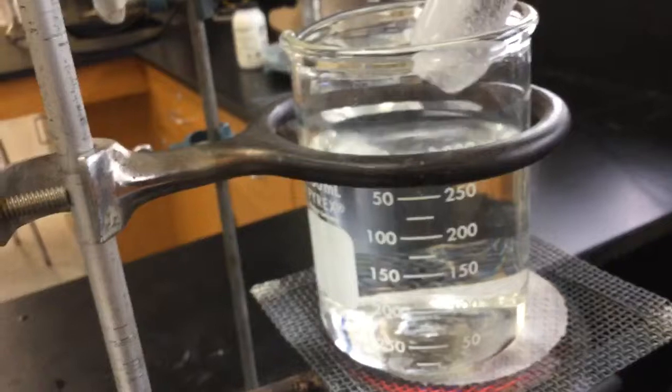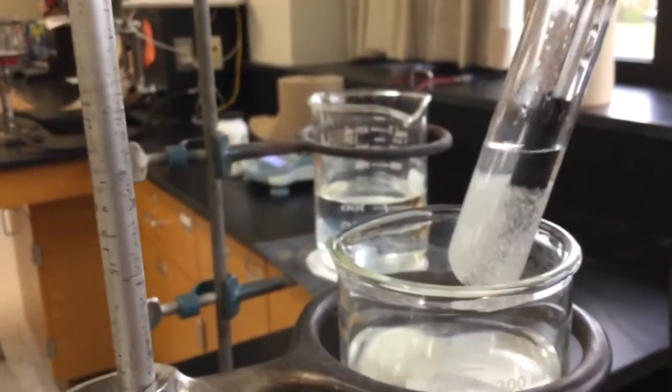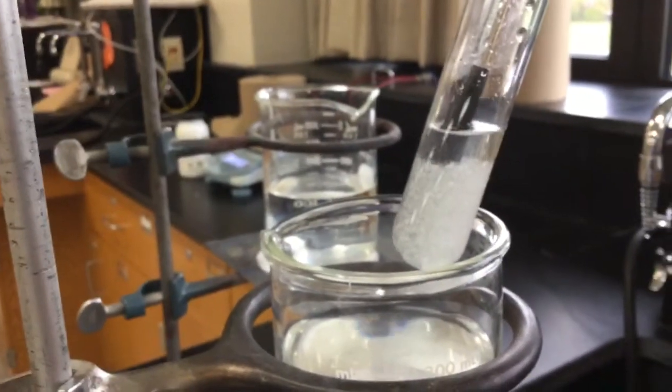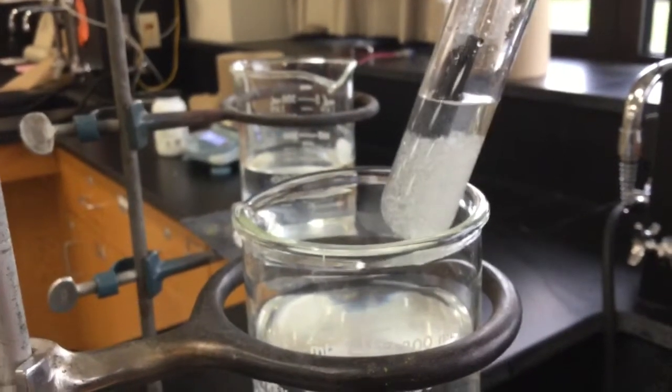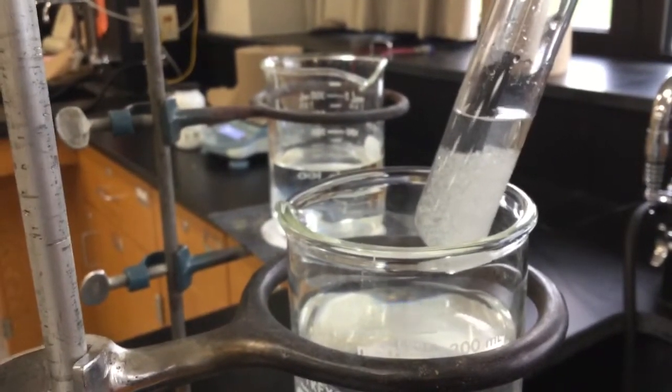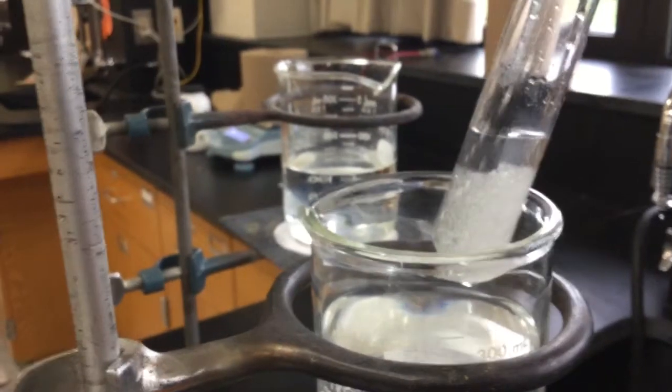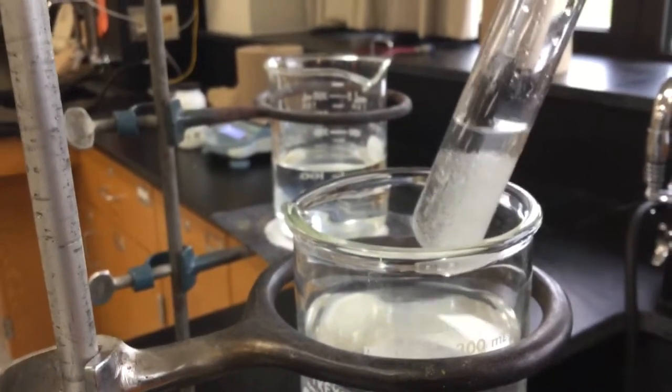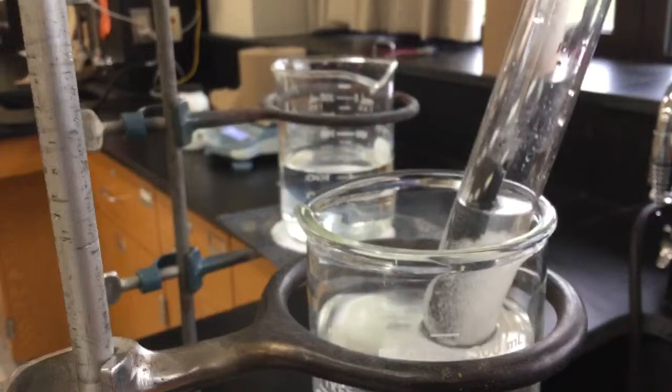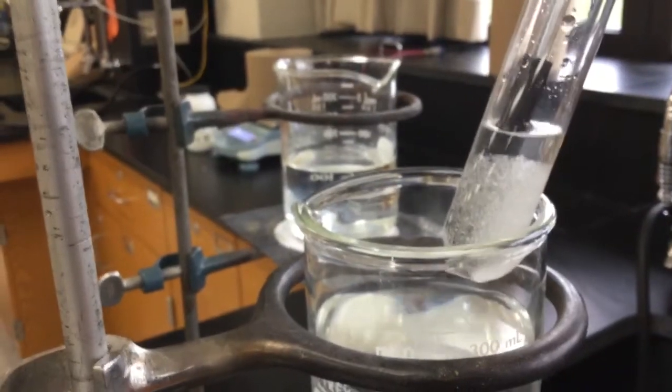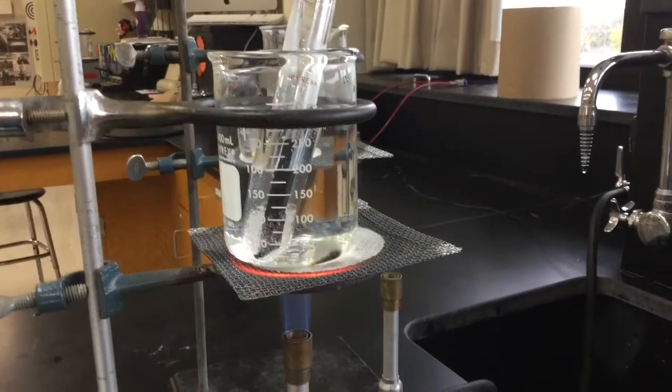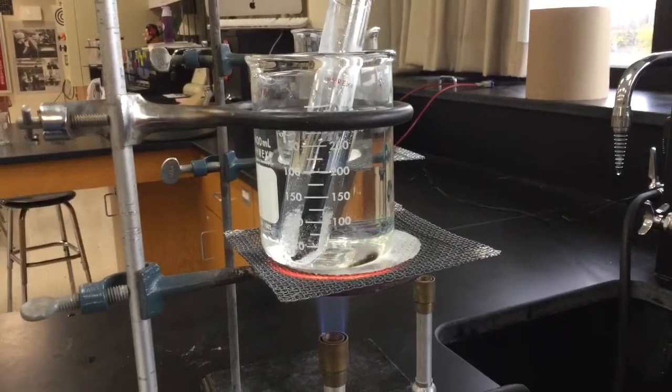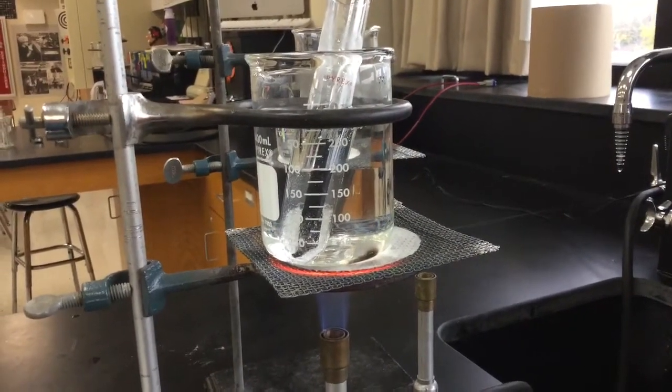So a lot of students, when they have this test tube and they have all that solute in there, want to say this is supersaturated. This is not supersaturated. Supersaturated is only when you trick it into holding more than it should. So if it's just got a bunch of stuff at the bottom, all it is is saturated. It's just holding the maximum, the extra is just at the bottom. So I'm just heating it up, waiting for all that solute and solvent to get dissolved.